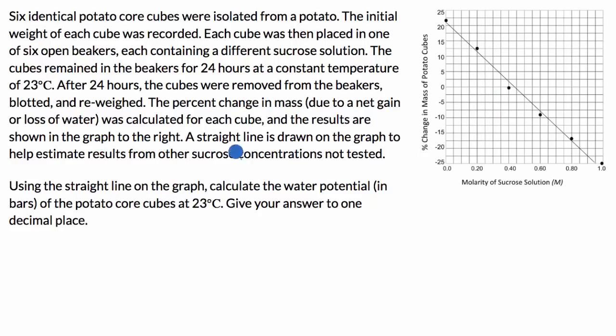So this graph right over here. A straight line is drawn on the graph to help estimate results from other sucrose concentrations not tested. Using the straight line on the graph, calculate the water potential in bars of the potato core cubes at 23 degrees Celsius, give your answer to one decimal place. So pause this video and see if you can work that out. All right, so first let's make sure we're understanding what's going on here.